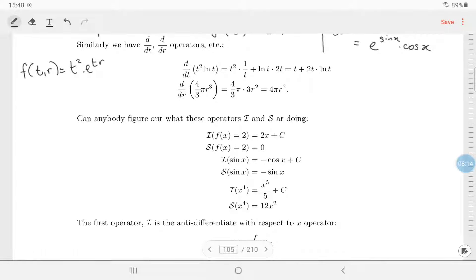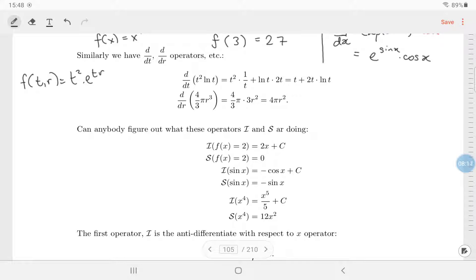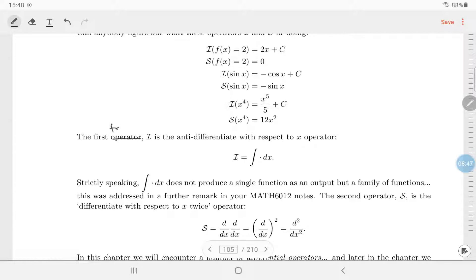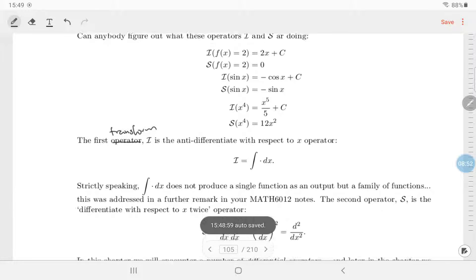Here we've got two more examples for you to try and guess what they are. So I takes 2 to 2x plus C, it takes sine x to minus cos x plus C, and x to the four to x to the five plus C. Any idea what that is? That would be anti-differentiated with respect to x. And S sending 2 to zero, sine x to minus sine x, x to the four to twelve x squared. What's that? That's differentiate with respect to x twice.